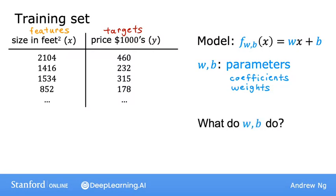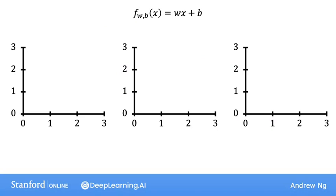Now let's take a look at what these parameters w and b do. Depending on the values you've chosen for w and b, you get a different function f of x which generates a different line on the graph. Remember that we can write f of x as a shorthand for f_w,b of x. We're going to take a look at some plots of f of x on a chart to help build intuition on how w and b, the parameters, determine f.